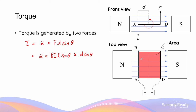In this case, the first theta is 90 degrees. The second theta refers to the angle between the direction of the force due to the motor effect and the plane of the coil or armature. When the coil is in the position shown, this is also 90 degrees. So we can simplify the equation into 2 × BIL × D × sin theta.